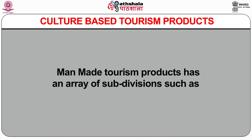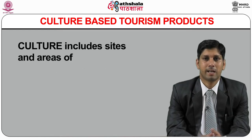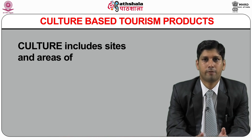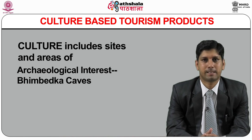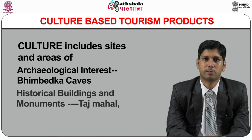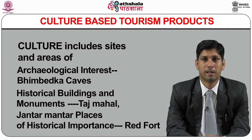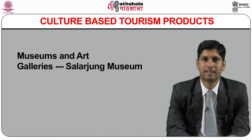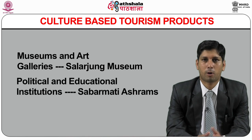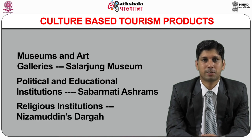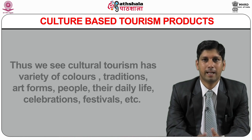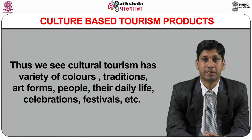Man-made tourism products have an array of subdivisions. Culture includes sites and areas of archaeological interest — a perfect example being the Bhim Bhetka Caves. It also includes historical buildings and monuments like the Taj Mahal and Jantar Mantar, places of historical importance like the Red Fort in Delhi, museums and art galleries like the Salarjung Museum, political and educational institutions like Sabarmati Ashrams, and religious institutions like Nizamuddin's Dargah in Delhi. Cultural tourism thus has a variety of colours, traditions, art forms, people, their daily life, celebrations and festivals.